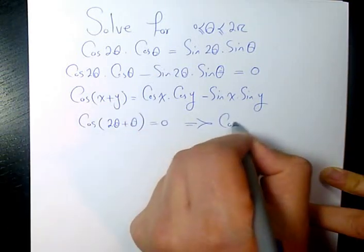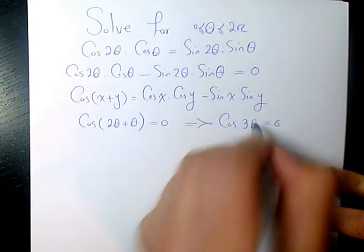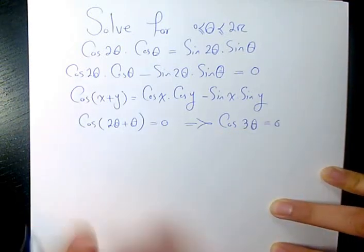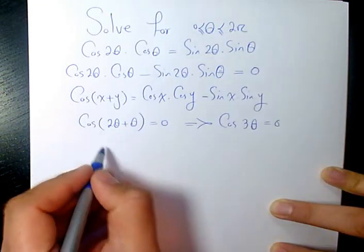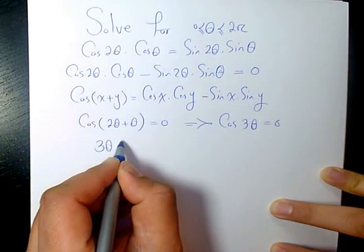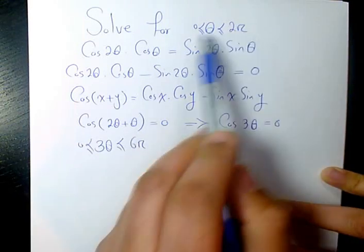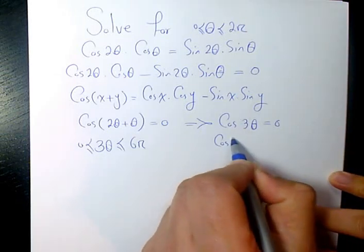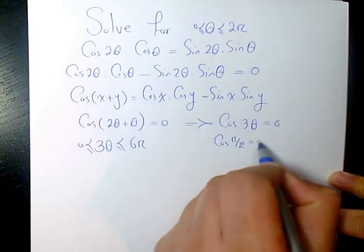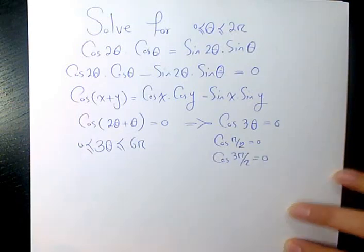2θ plus θ is 3θ and cos 3θ equals 0. We know θ is changing from 0 to 2π, so it means that 3θ is changing from 0 to 6π, because I multiply all sides by 3. And we know cos π/2 is 0, and cos 3π/2 is 0 as well.